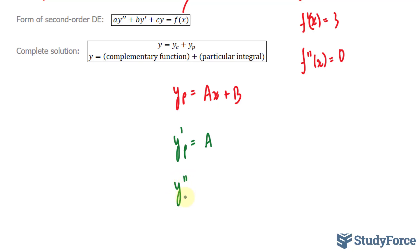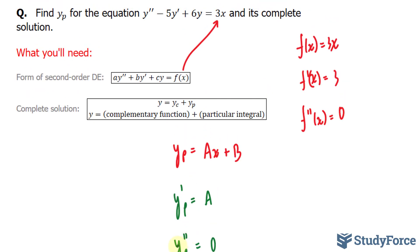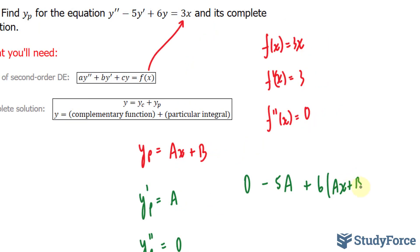Once again, y double prime sub p gives us 0. I'll substitute these values into my differential equation, where y double prime becomes 0 minus 5 times a plus 6 times ax plus b equals 3x.